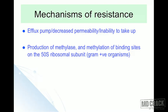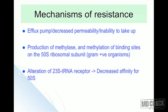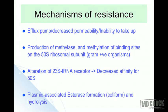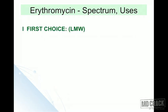Third resistance mechanism is alteration of the specific 23S rRNA receptor site, leading to decreased affinity for the 50S ribosomal subunit. Lastly, plasmid-associated esterase formation practiced by coliform bacteria leads to hydrolysis of the antibiotic.